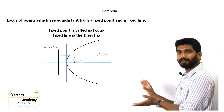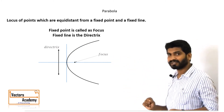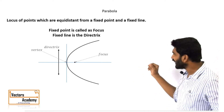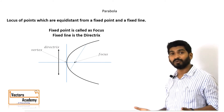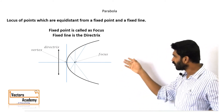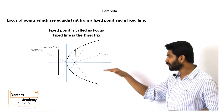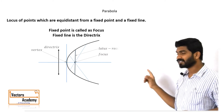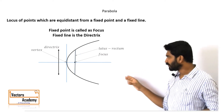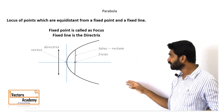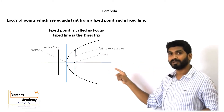Now we will understand a few basic parts of a parabola. The fixed point is called the focus and the fixed line is the directrix. There are many chords that can be drawn to a parabola; the chord which passes through the focus is called a focal chord. The focal chord which is perpendicular to the axis of the parabola is called the latus rectum. Other major parts include the focus, the directrix, the latus rectum, and the vertex — which is the endpoint of the parabola.